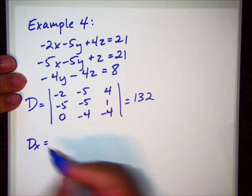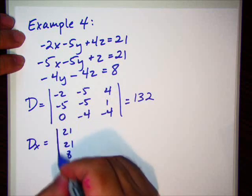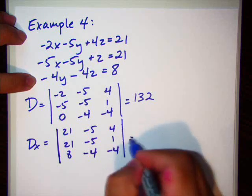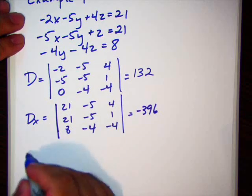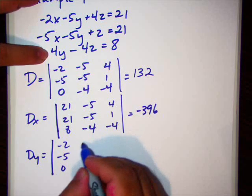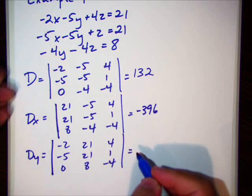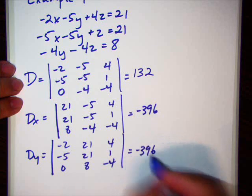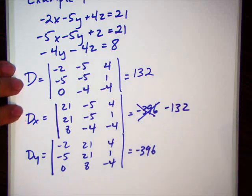The x, that means we get rid of the x column, put it in the constant column. So, it's 21, 21, 8 with negative 5, negative 5, negative 4, 4, 1, negative 4. Turns out the determinant is negative 396. Yeah, I cheated. Made a mistake. I looked at the wrong one. Dx is actually negative 132. You'll forgive me. Yes? Yes.